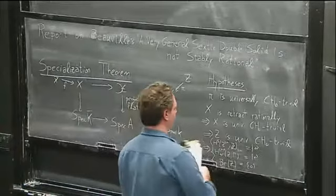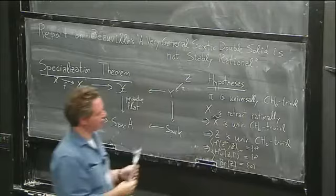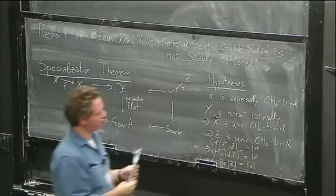So if you can construct a diagram like this where, for your Z, you can prove that one of these fails, then it follows that Z is not universally Chow-zero trivial. And then for the geometric generic fiber, it follows that it's also not universally Chow-zero trivial, and therefore not retract rational. That's the approach.